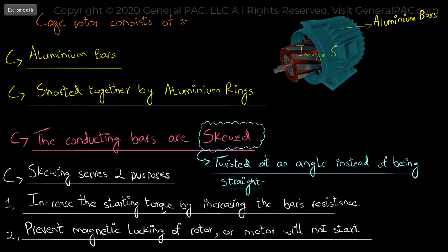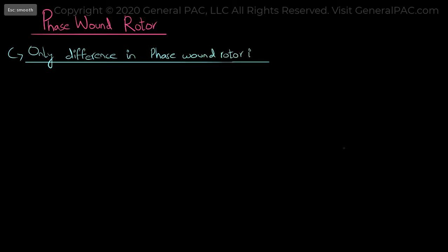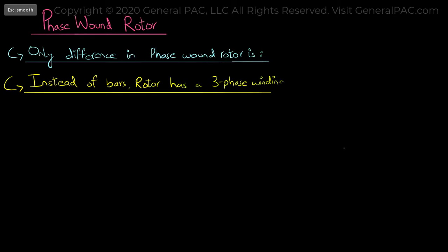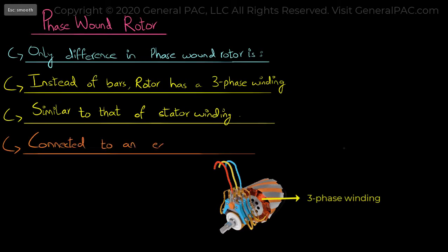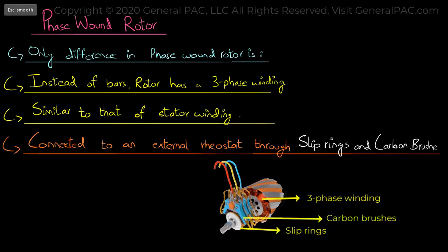So let's move on to the discussion of phase wound rotors. The only difference in phase wound rotors is that instead of having bars, the rotor has three phase winding which is similar to that of a stator winding. The windings are connected to an external rheostat through slip rings and carbon brushes which are present on the rotor shaft.